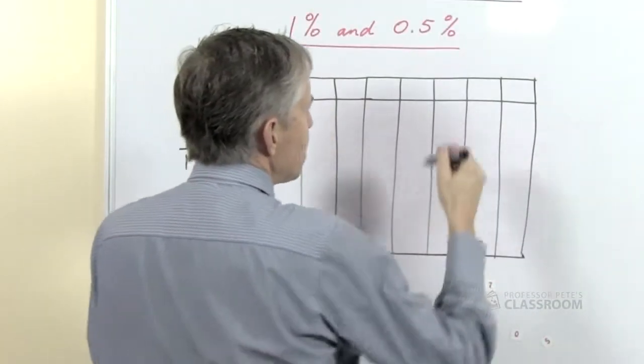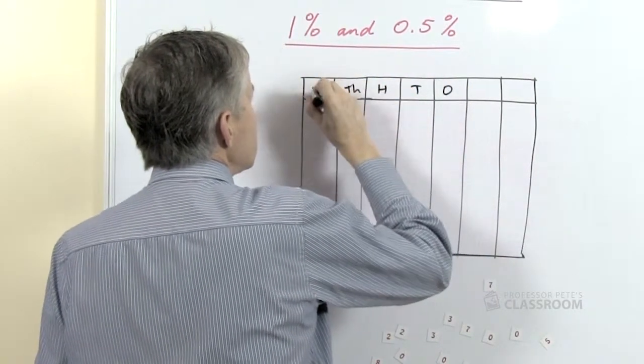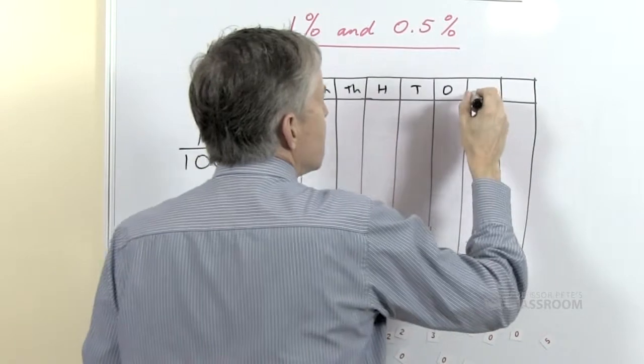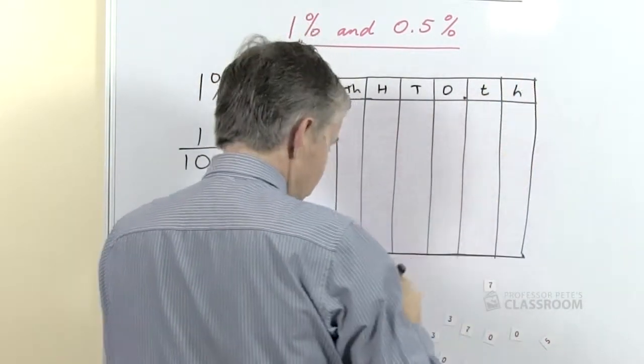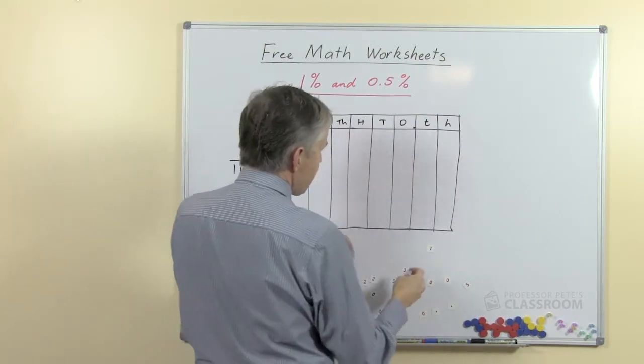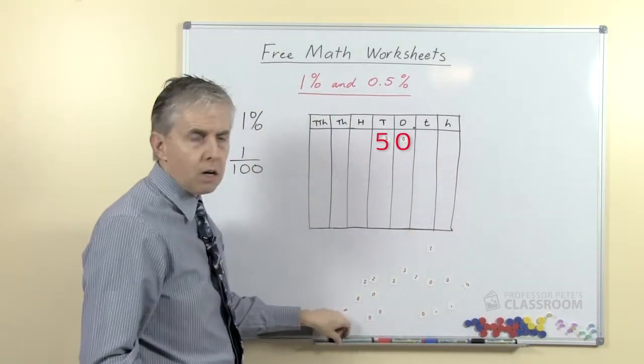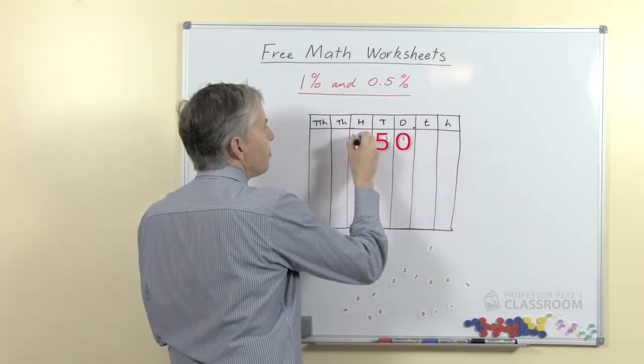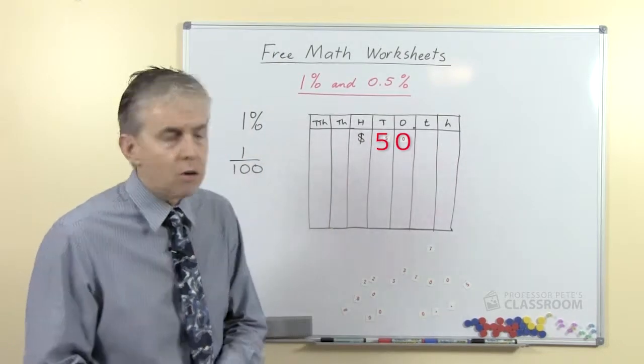Let's make this a little bit more challenging, so we'll say this is the ones column and I'll just label these. So this will be the decimal point, so this will be tenths and this will be hundredths. So now let's start with the number fifty as a whole number and we're going to call it fifty dollars, so it's got some monetary value and say what would one percent of fifty dollars?